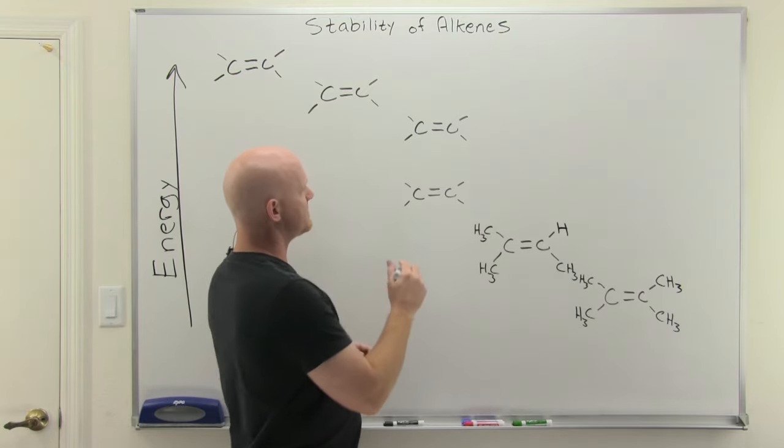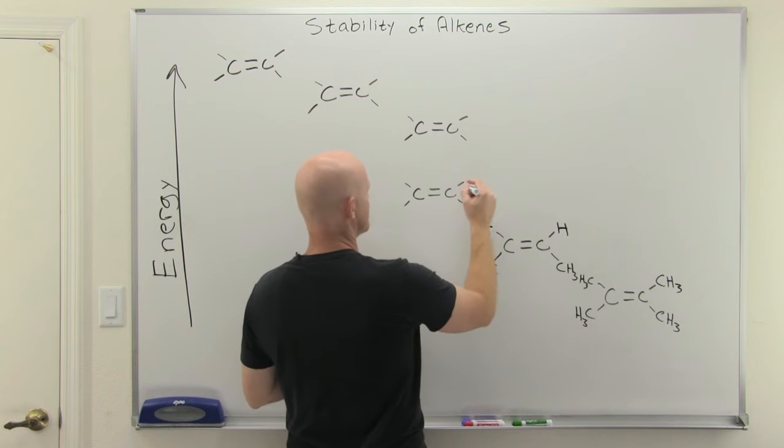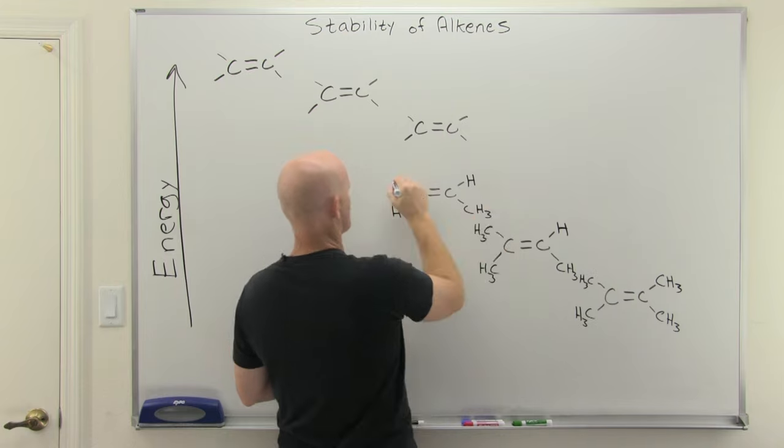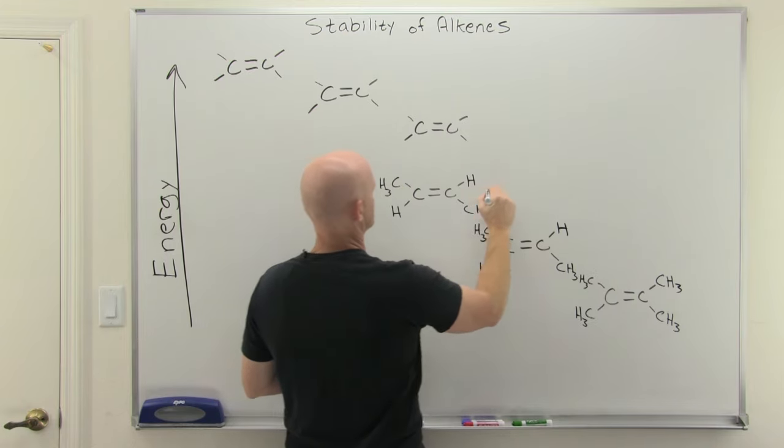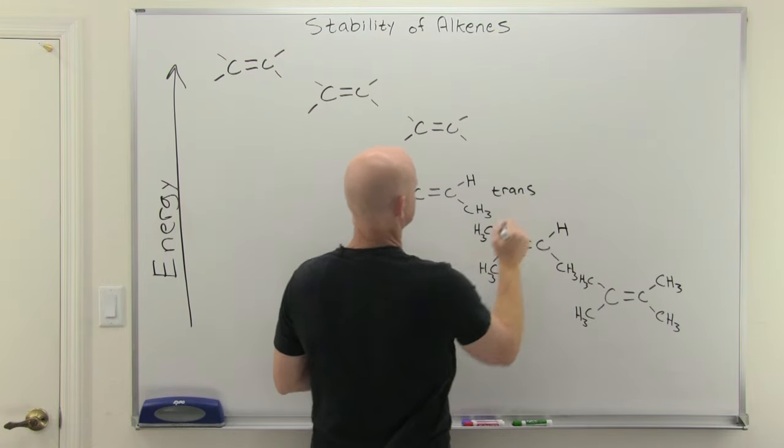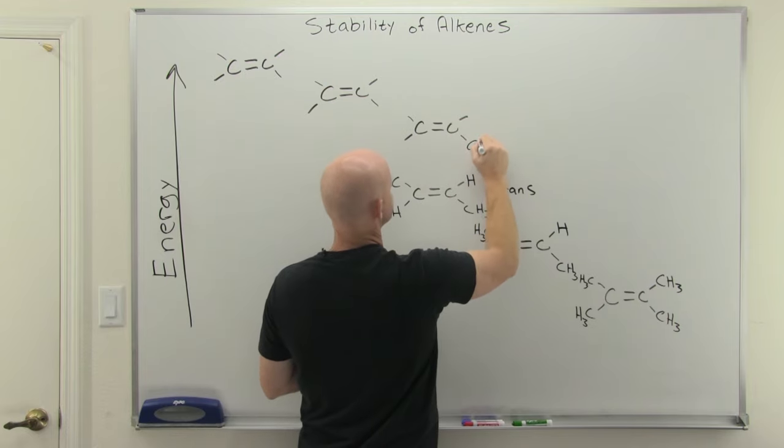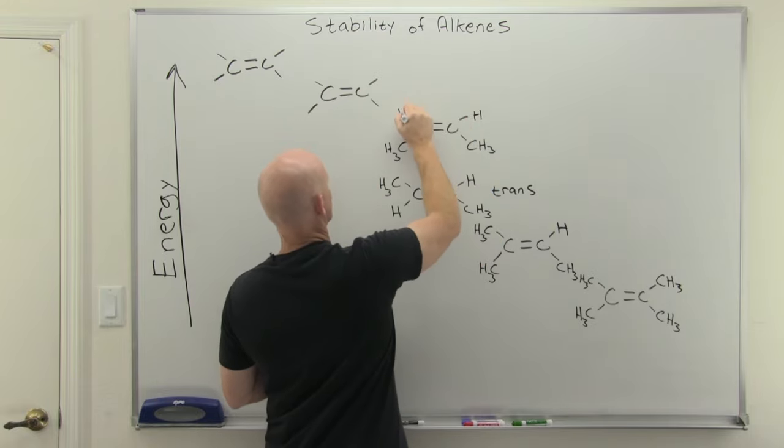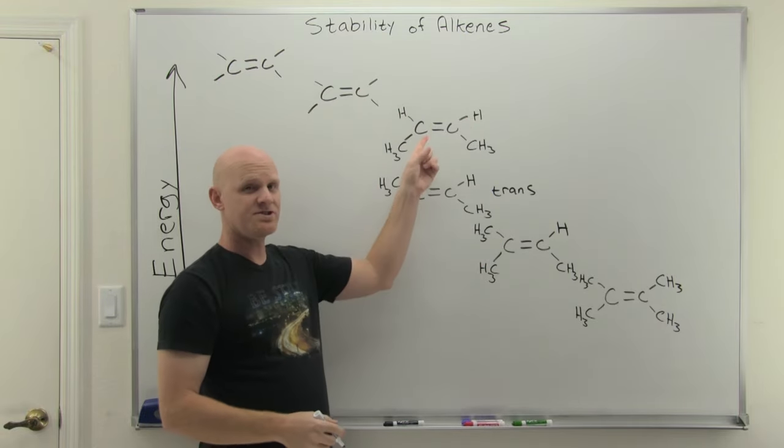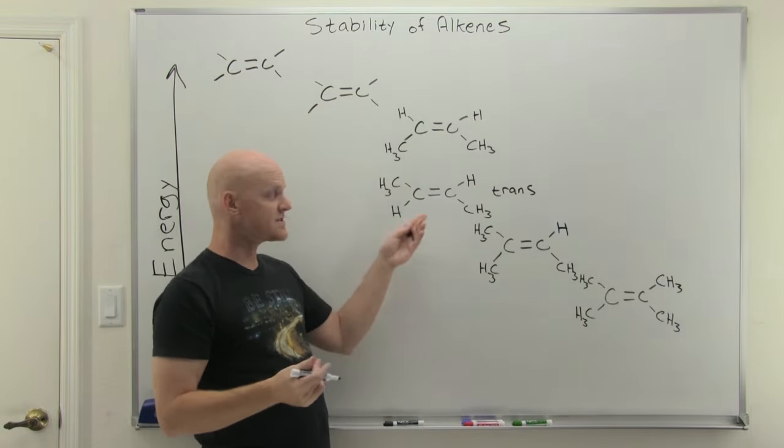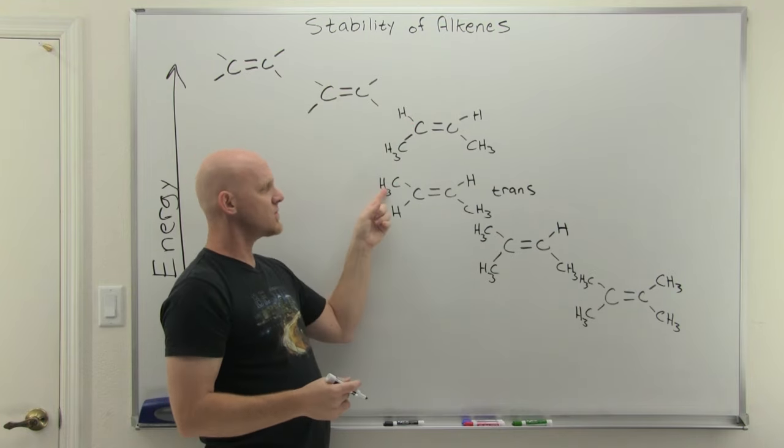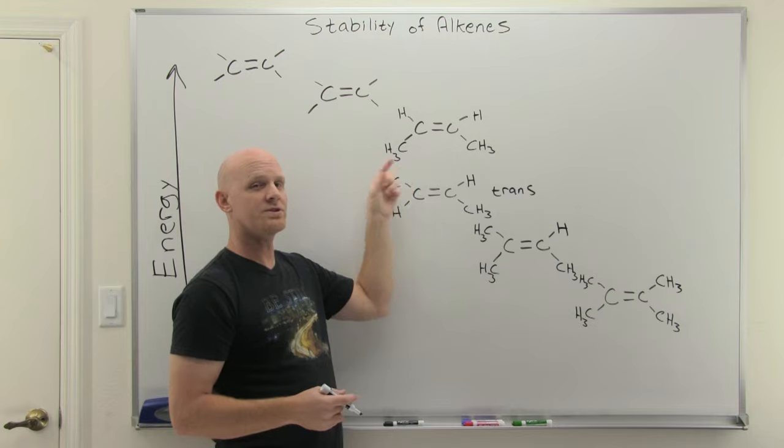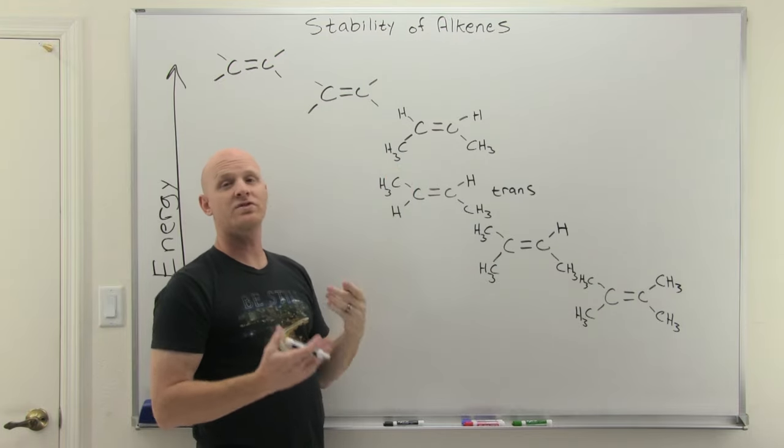Next on our way up the list are going to be di-substituted. It turns out there's a couple of arrangements you should definitely be able to compare. One is trans here, and the other here is going to be cis. These are both di-substituted arrangements, but with a different geometry here. Double bonds can't rotate, so these are distinct from each other. The trans experiences less sterics than the cis, where these two methyl groups are closer to each other. As a result, the trans is more stable, lower energy.